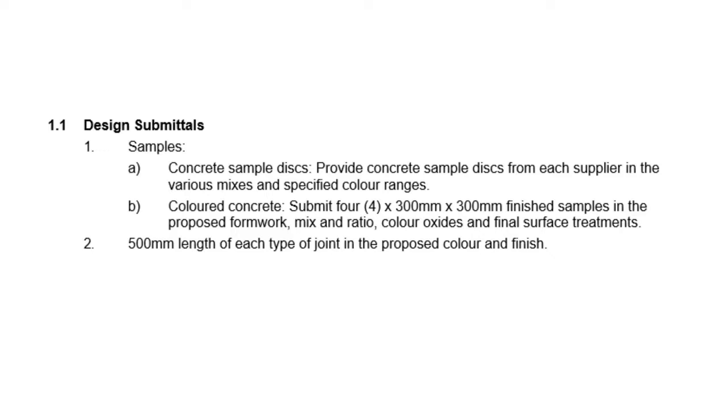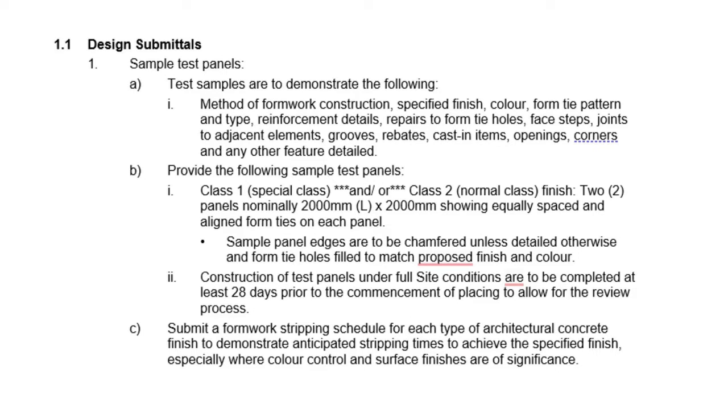And then number two, you outline your procedural requirements. You want to request small-scale samples of your concrete finish first, including the proposed formwork, your mix and the ratios, colour oxides, etc., as we discussed. After that, you want to request a larger format sample panel or a prototype panel — this can be, let's say, 1800 by 1800 — which you can then use to see your edge details and make sure the surface finish is acceptable. Once you've accepted those, you want to request a quality benchmark, meaning that the first installation of the works must be reviewed and accepted prior to continuing on and pouring the rest of the works. This then sets a quality benchmark for the rest of the works to adhere to, and you want to make sure that first one matches your samples and your prototypes.